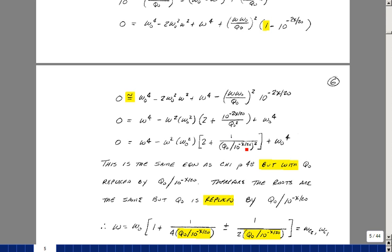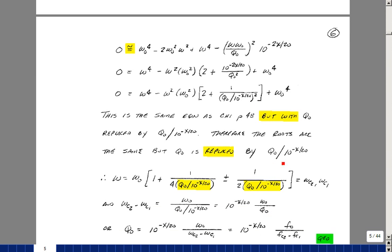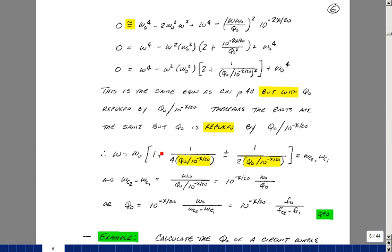You could further write this as the reciprocal of this term right here, squared, pulling out that 2 again. But this now looks exactly like the equation we had on page 48 of chapter 1, but the term Q_0 is replaced by Q_0 divided by 10 to the minus x over 20. So we'll have exactly the same roots as before, but just replace Q by this new expression. This would be our value for the two roots, which would be the difference of our x dB case. If we take the difference of these two, this term drops out. We've got ω_0, and then this term twice, so the 2 disappears. Bring this up into the numerator, and now we've got the difference of the x dB frequencies is 10 to the minus x over 20 times ω_0 over Q_0. And the last thing we can cross multiply. So Q_0 would be equal to this term, and then dividing by this term with ω_0. If you divide by 2π, we get the formula that we were looking at on the previous page.